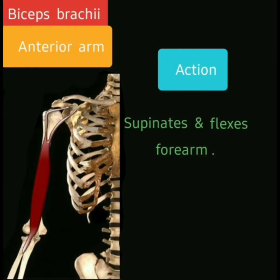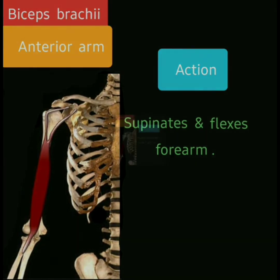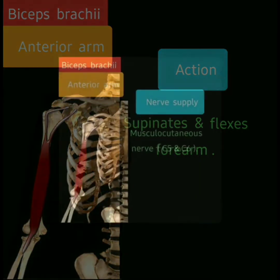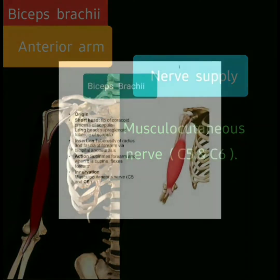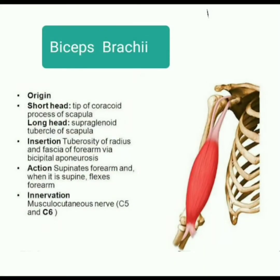The action of the biceps brachii muscle is to supinate and flex the forearm. The nerve supply of biceps brachii muscle is the musculocutaneous nerve, with a root value of cervical 5 and cervical 6.